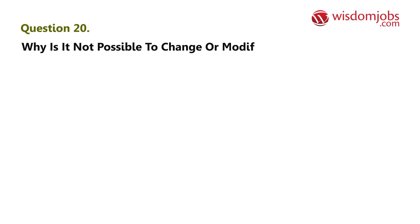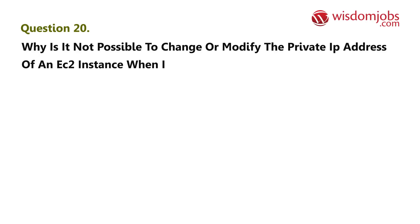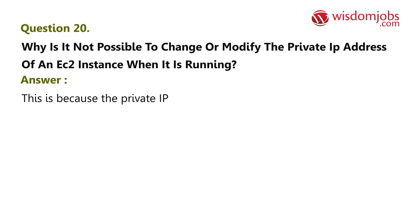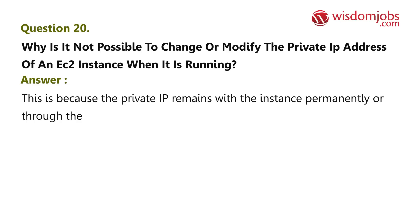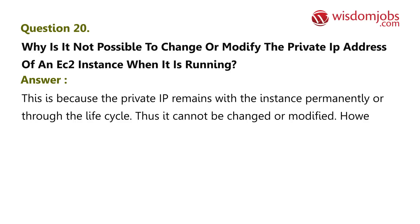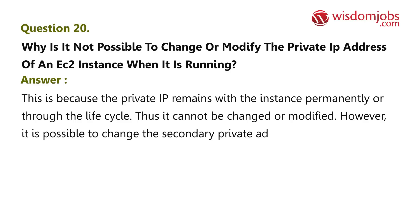Question 20: Why is it not possible to change or modify the private IP address of an EC2 instance when it is running? Answer: This is because the private IP remains with the instance permanently throughout its lifecycle, and thus cannot be changed or modified. However, it is possible to change the secondary private address.